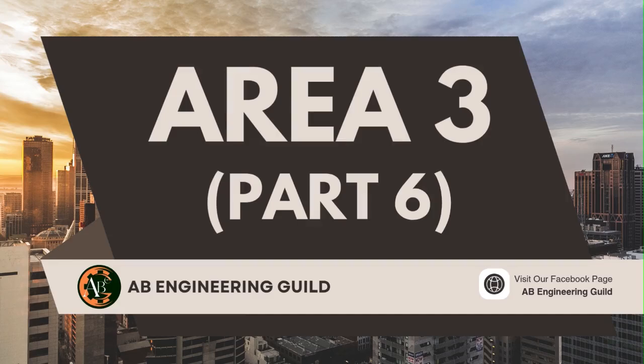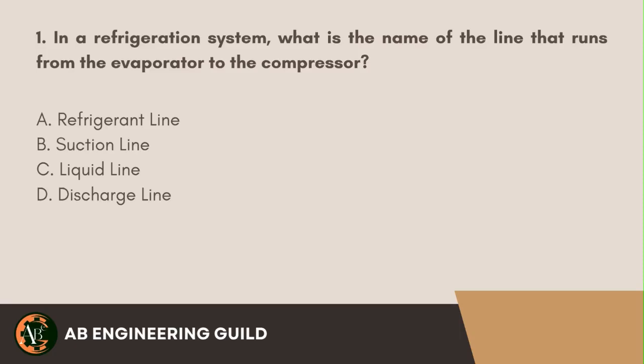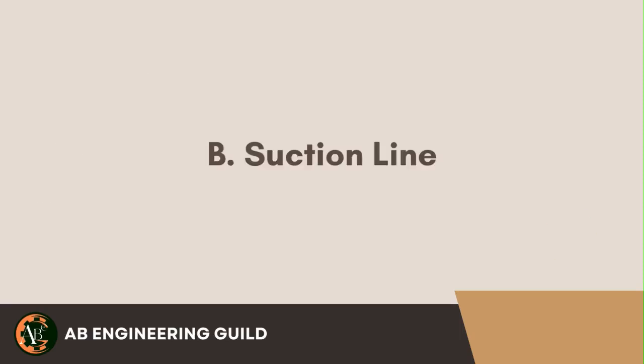Question 1. In a refrigeration system, what is the name of the line that runs from the evaporator to the compressor? A. Refrigerant line. B. Suction line. C. Liquid line. D. Discharge line. Answer: B. Suction line.